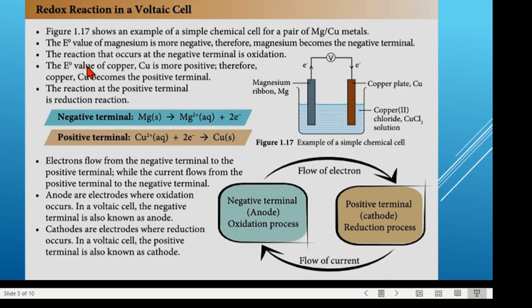The enode value of copper is more positive, meaning its tendency to receive electrons is higher. So copper will become the positive terminal. Copper will receive the electrons donated by the magnesium. Therefore, the reaction at the positive terminal is reduction. Remember: reduction means gaining electrons.